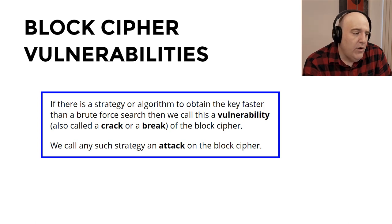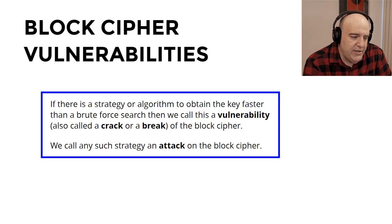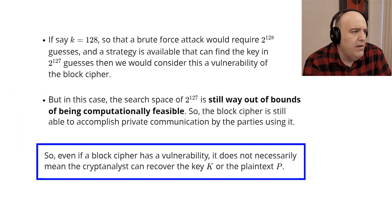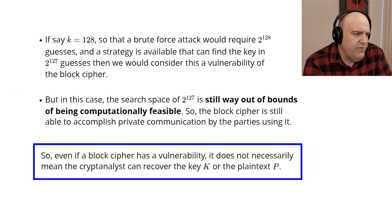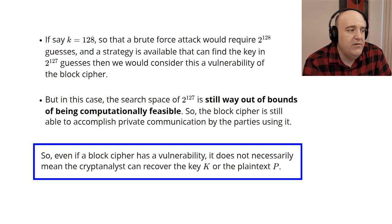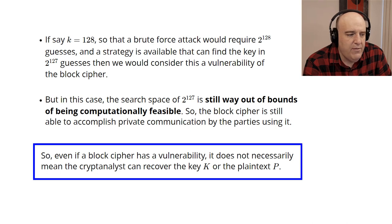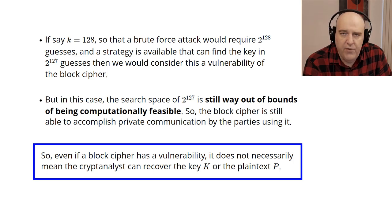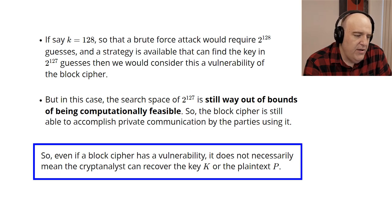What would a vulnerability be in a block cipher? If there's a strategy or algorithm to obtain the key faster than a brute force search, we'd call this a vulnerability, a crack, or a break of the block cipher. For example, if k = 128, a brute force attack requires 2¹²⁸ guesses. If a strategy finds the key in 2¹²⁷ guesses, that would be a vulnerability — but notice 2¹²⁷ is still computationally infeasible. So just because a vulnerability exists academically doesn't necessarily mean the cryptanalyst can actually recover the key K or the plaintext P.